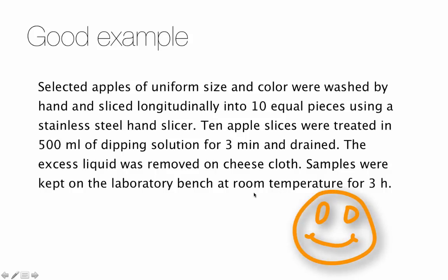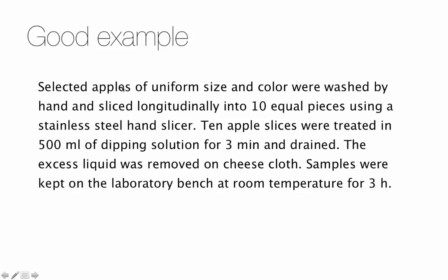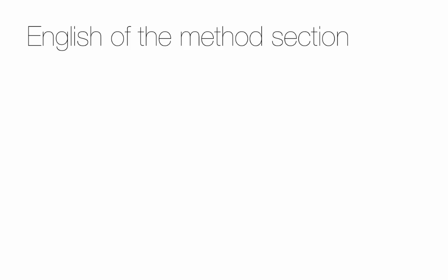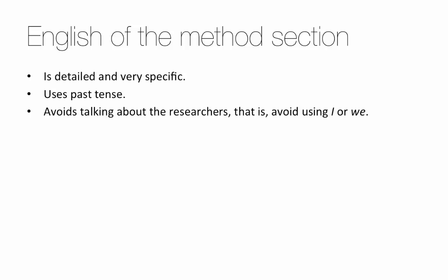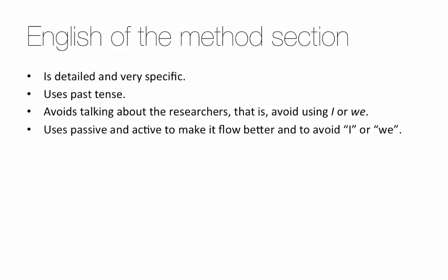Finally, here's the good example — the actual paragraph from the research paper. Using passive: 'Selected apples of uniform size and color were washed by hand and sliced longitudinally into 10 equal pieces using a stainless steel hand slicer,' and so on. Passive is used so that we don't have to say 'we,' and we don't connect sentences with 'first and then and then.' It's not a story. You're just explaining the important points about how the apples were prepared so that if someone else gets a different result, they might say 'in my research we dipped for 10 minutes, and these people only dipped for three minutes — maybe that's why my results are different.'